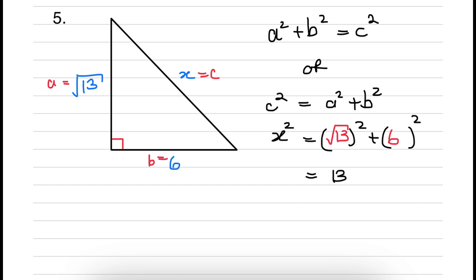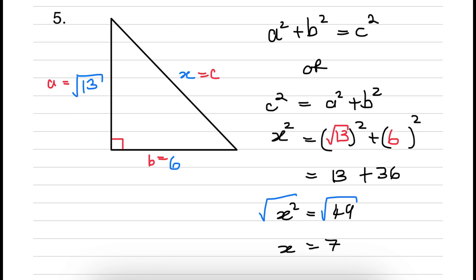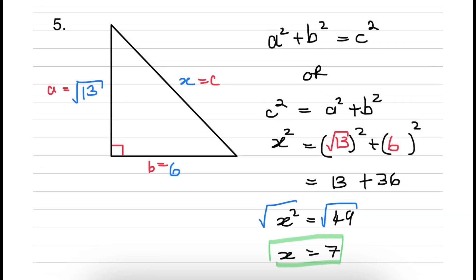So that's just 13, and 6 squared is 6 times 6, which is 36. Adding these values: 13 plus 36 gives us 49. Finding the square root on both sides, the square root of 49 is 7, so x is equal to 7. This is the length of the hypotenuse — 7 units.